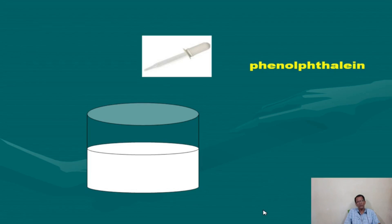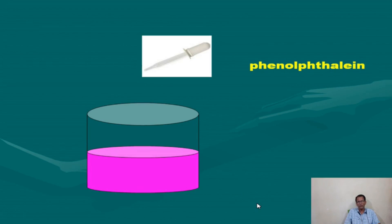Phenolphthalein — when phenolphthalein drops are added to base, it forms a pink color. This is one important characteristic of base: base reacts with phenolphthalein to produce pink color.